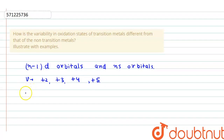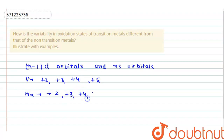On the other hand, manganese shows +2, +3, +4, +5, +6, as well as +7 oxidation states.